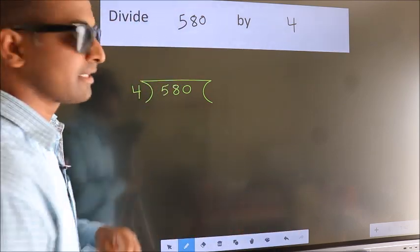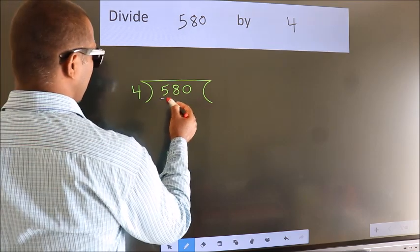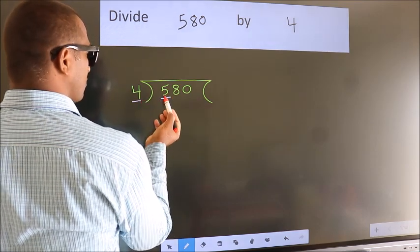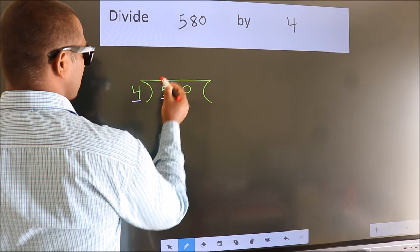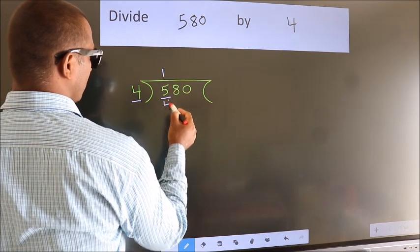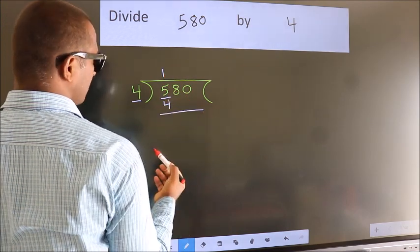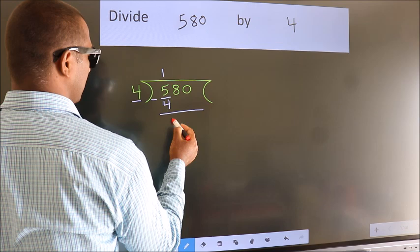Next. Here we have 5, here 4. A number close to 5 in the 4 table is 4 once 4. Now we should subtract. We get 1.